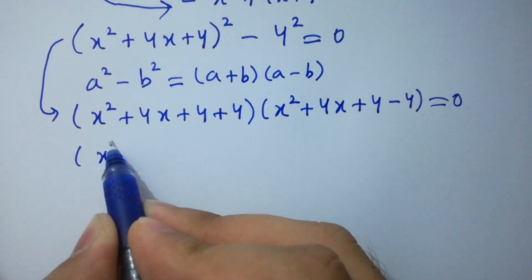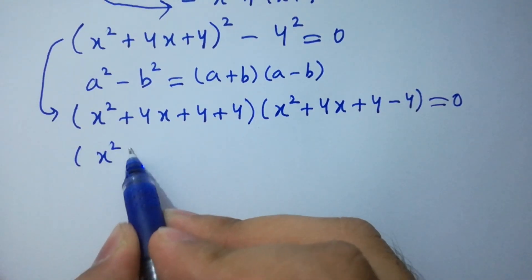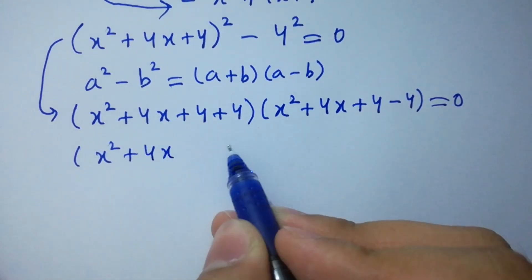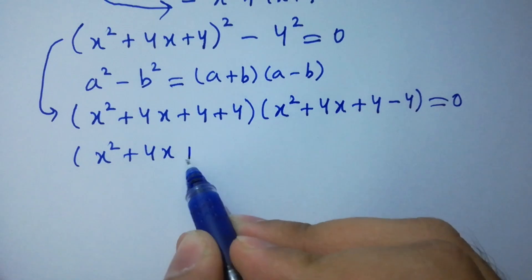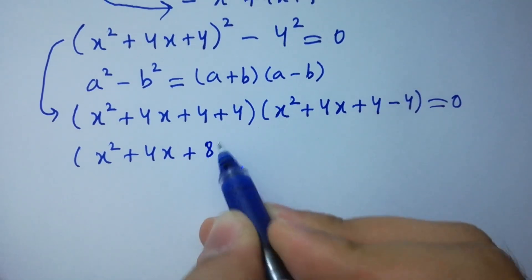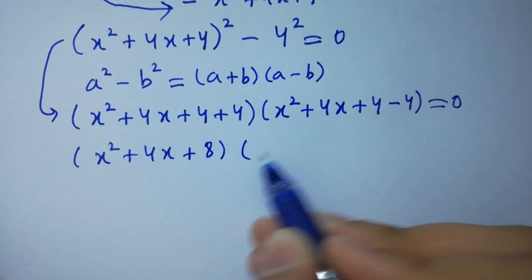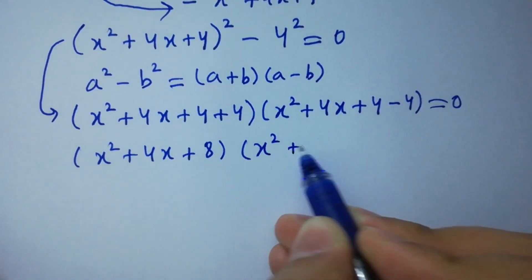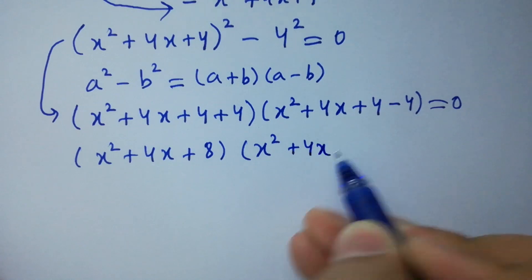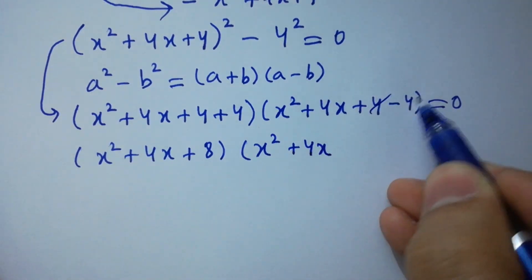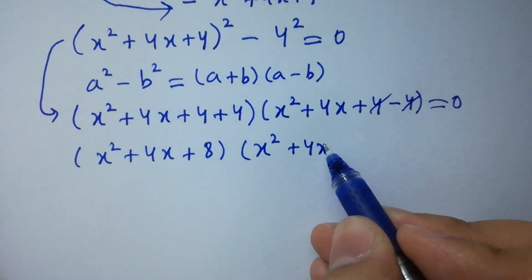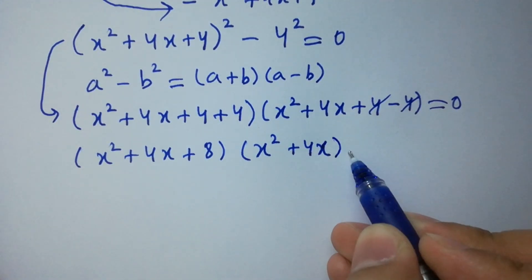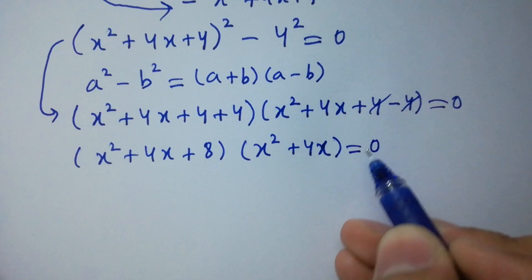So: x squared + 4x + 4 + 4 gives x squared + 4x + 8. And here x squared + 4x + 4 − 4: the 4 and 4 cancel, leaving x squared + 4x equal to 0.